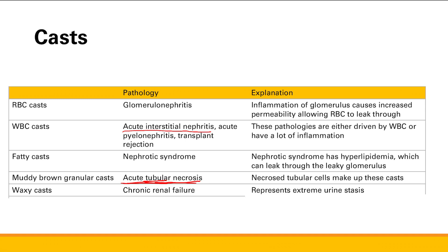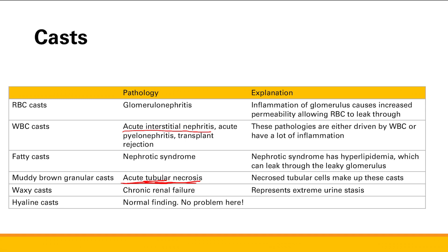Finally, we have hyaline casts. This one's important to know because you don't want to get tricked — hyaline casts are a normal finding in urine. There's nothing wrong that causes them; you can normally see them. So if you see hyaline casts, there's no related pathology.